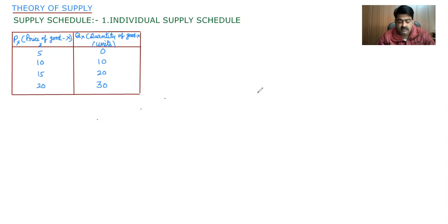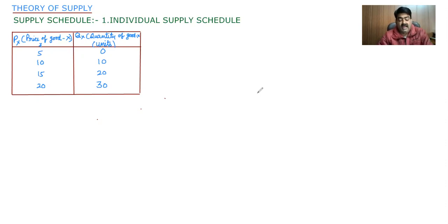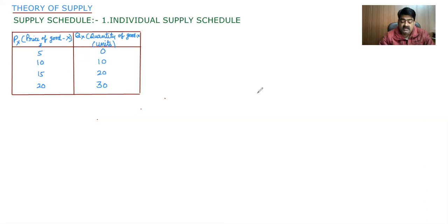Now we will discuss about supply schedule. Supply schedule is a table showing various quantities of the commodity offered for sale at different possible prices of that commodity at a point of time. It has two aspects, just like the law of demand. The first one is individual supply schedule and the second one is market supply schedule.